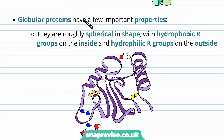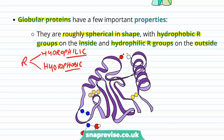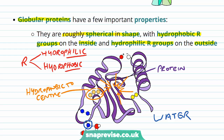We need to distinguish a few important properties that globular proteins have. They are spherical in shape, like a blob or a ball, and they have hydrophobic R groups on the inside and hydrophilic R groups on the outside. Some R groups of amino acids are hydrophilic, meaning they love and are attracted to water, while others are hydrophobic and repel water. This purple chain represents the polypeptide, and since proteins are surrounded by water in our aqueous cells, the hydrophobic residues, like the orange ones here, cluster into the centre away from the water, while the hydrophilic residues face the outside where they can interact with the water.